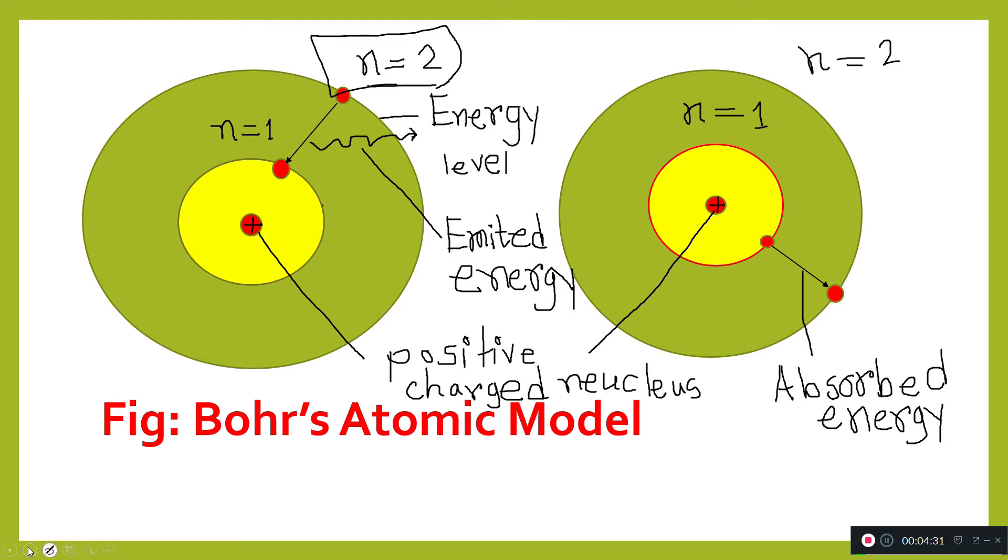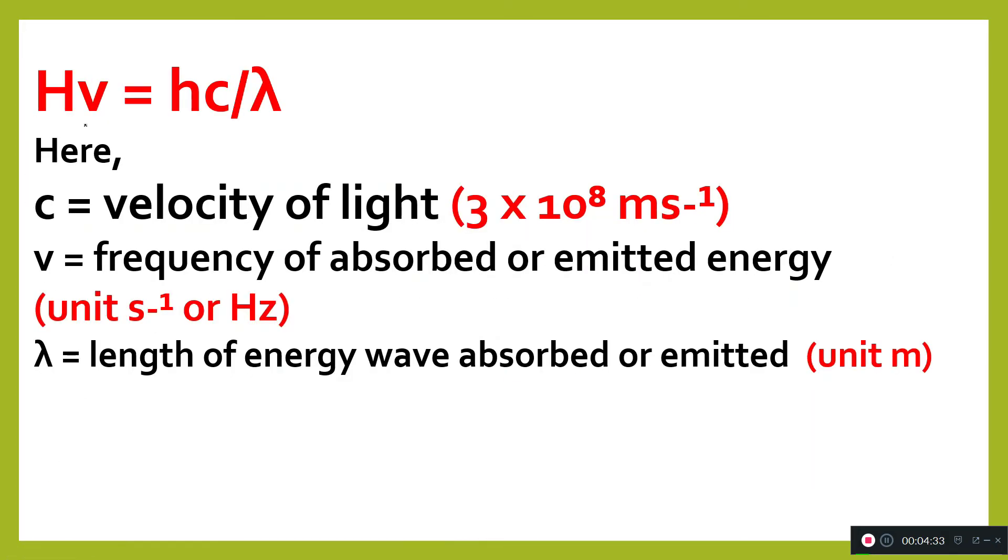The absorbed or emitted energy: hν equals hc divided by λ. Here, c is velocity of light, 3 times 10 to the power 8 meters per second. ν is frequency of absorbed or emitted energy, unit per second or Hertz. λ is length of energy wave absorbed or emitted.